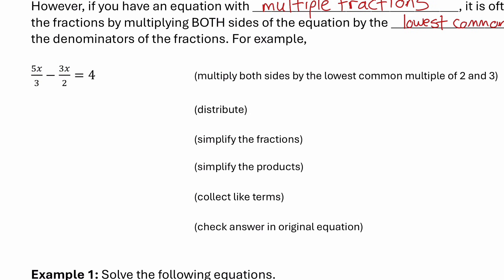The multiples of 3 are 3, 6, 9, 12, and so on. The multiples of 2 are 2, 4, 6, 8, and so on. The lowest common multiple they have is 6.